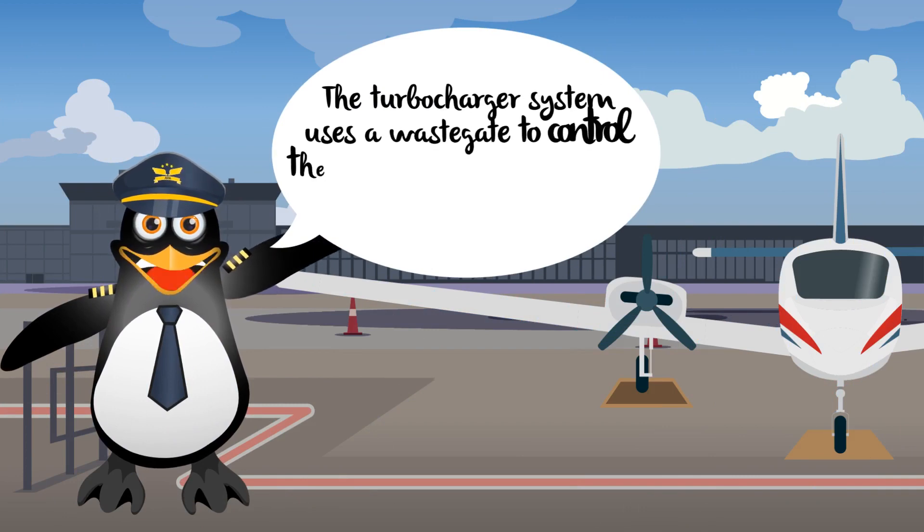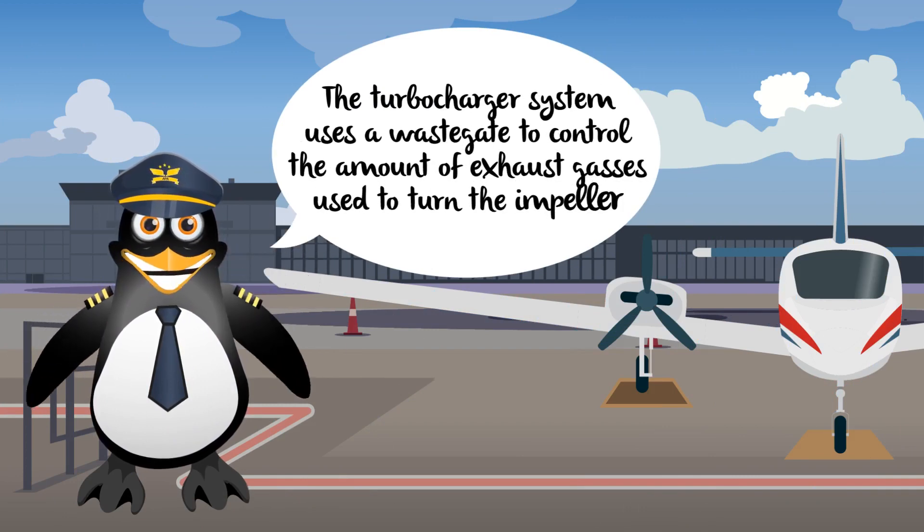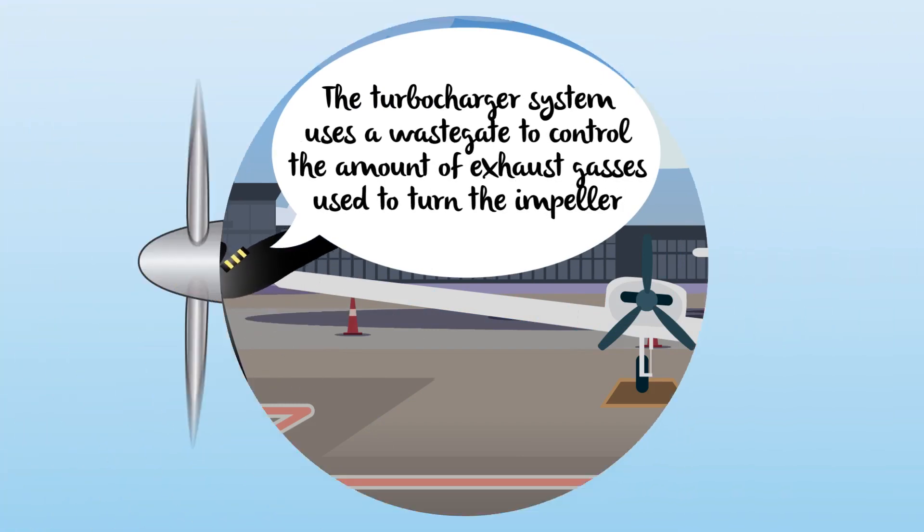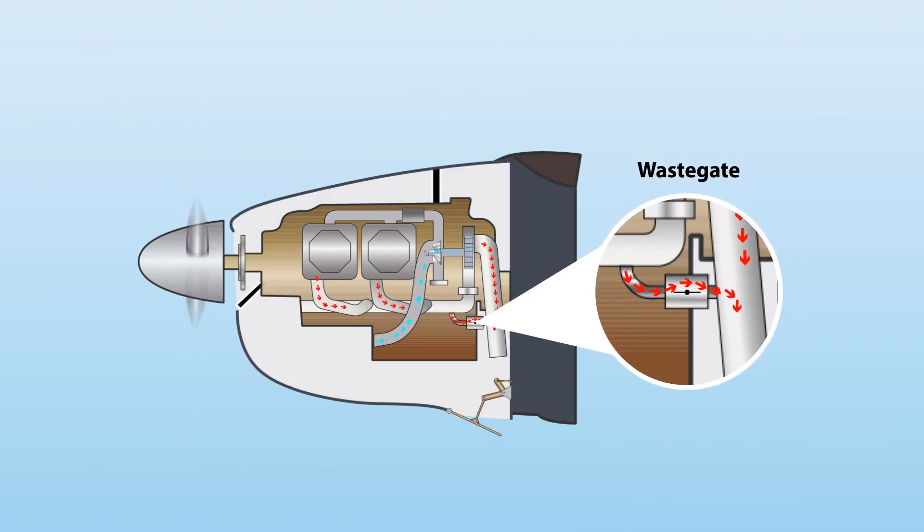The turbocharger system uses a wastegate to control the amount of exhaust gases used to turn the impeller. The wastegate is an adjustable butterfly valve installed in the exhaust system to vary the mass of exhaust gas flowing into the turbine. When closed, most of the exhaust gases are forced to flow through the turbine. When open, the exhaust gases are allowed to bypass the turbine by flowing directly out through the engine's exhaust pipe.